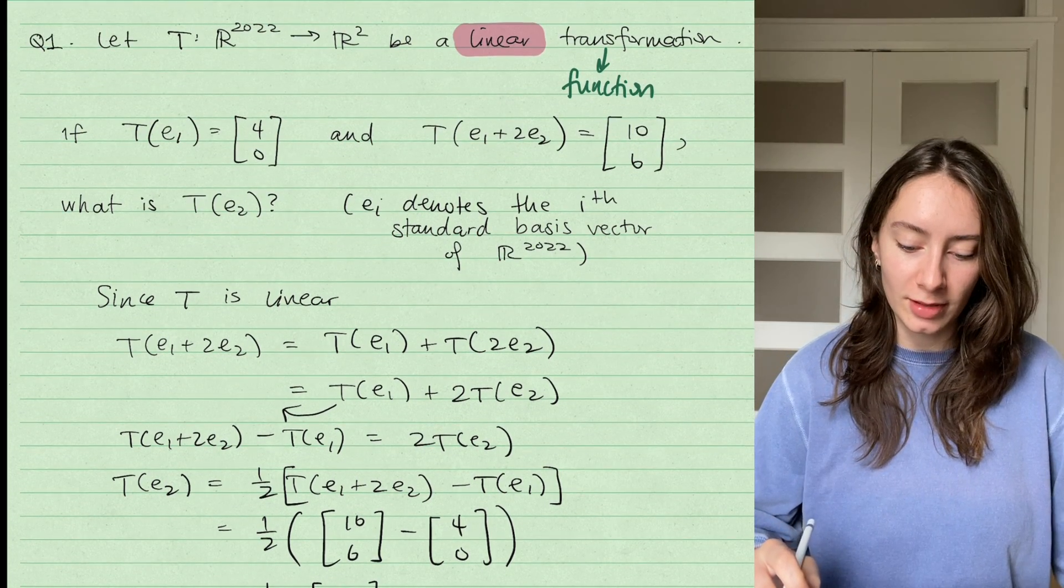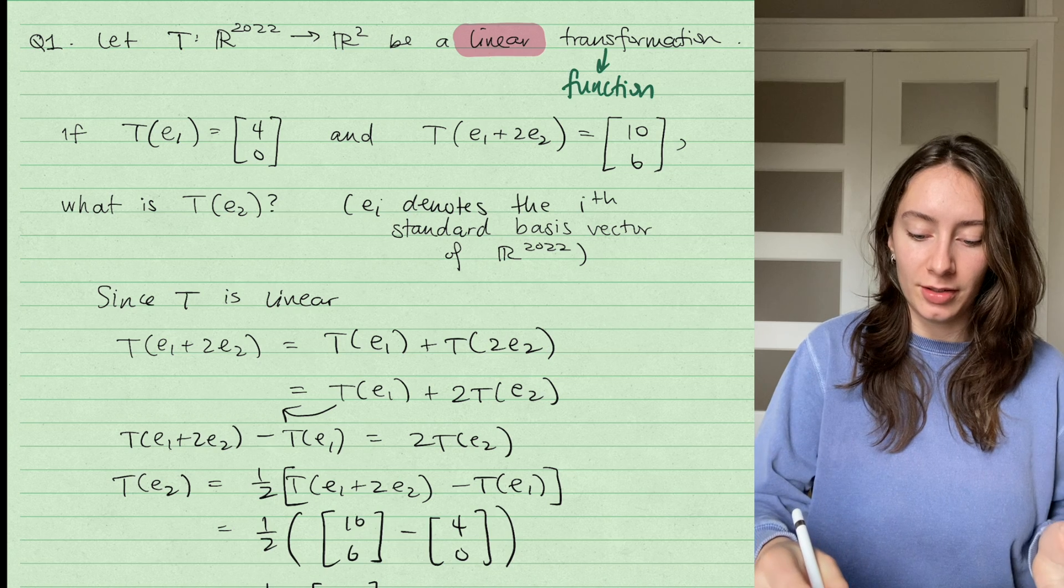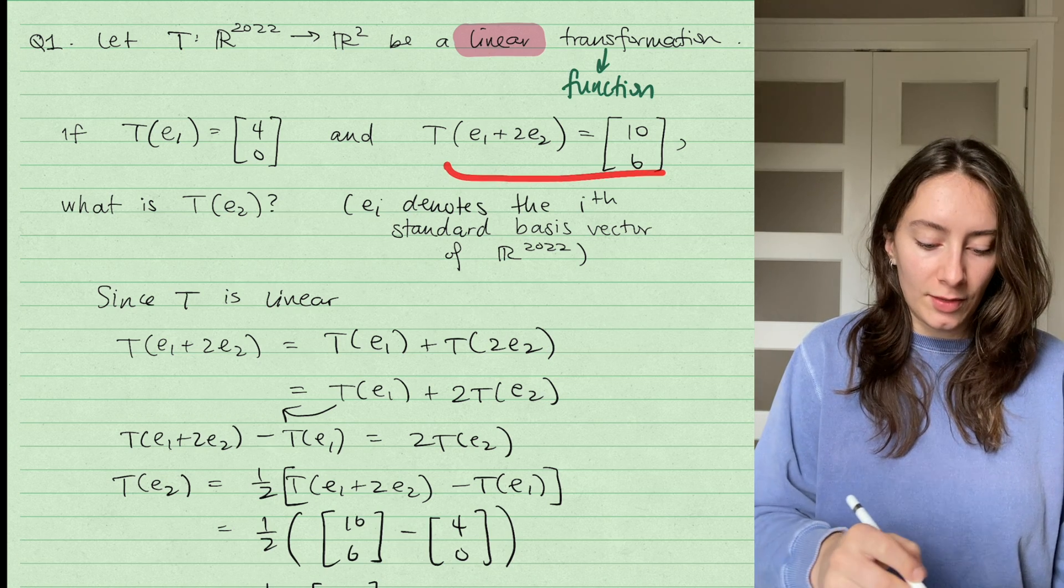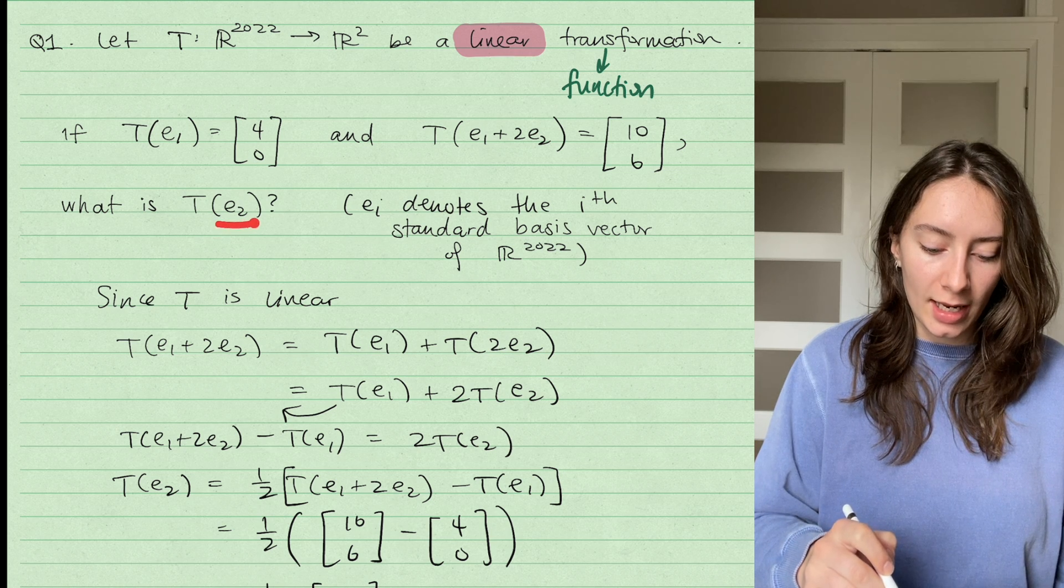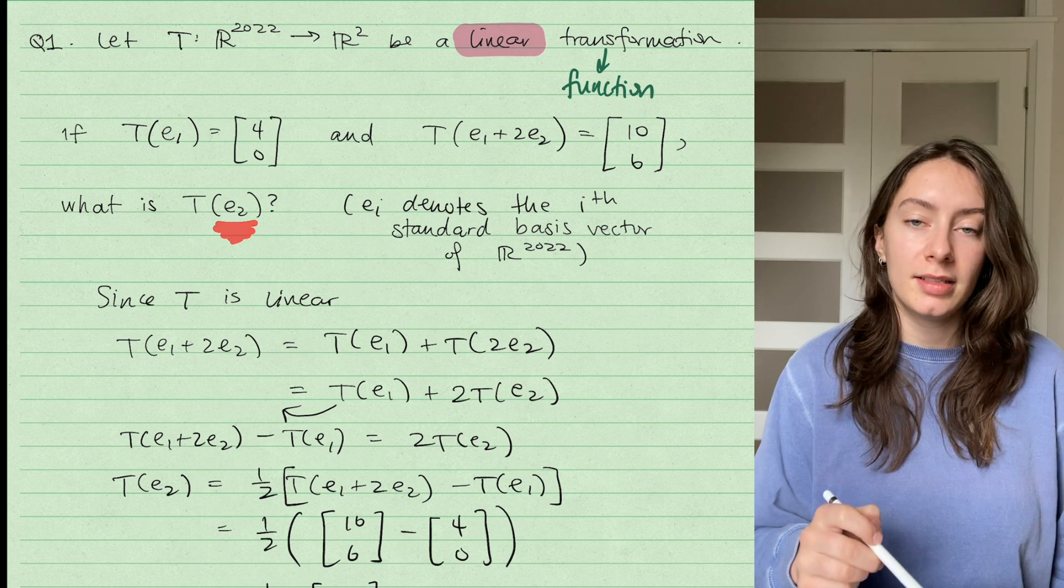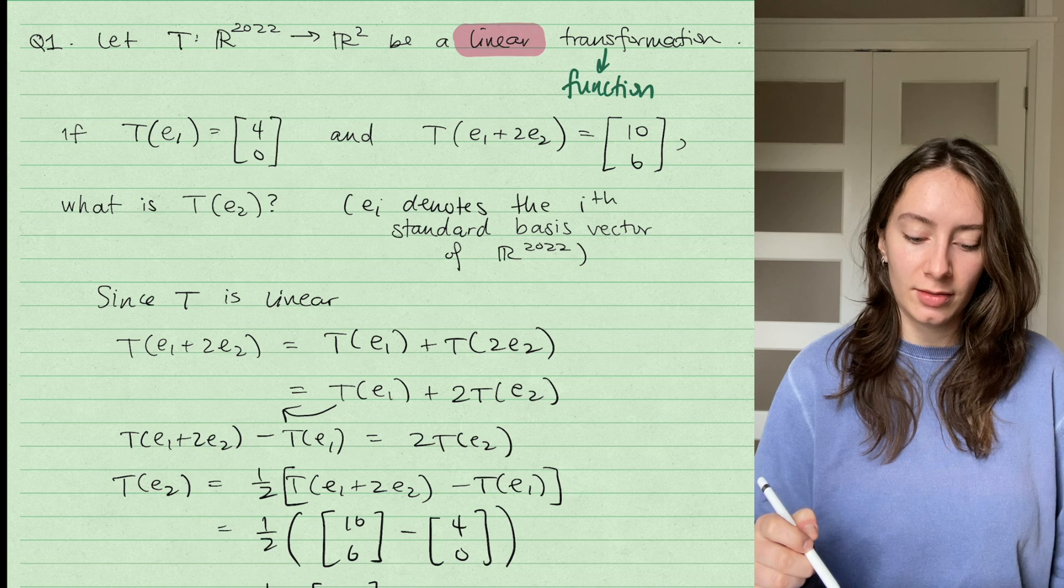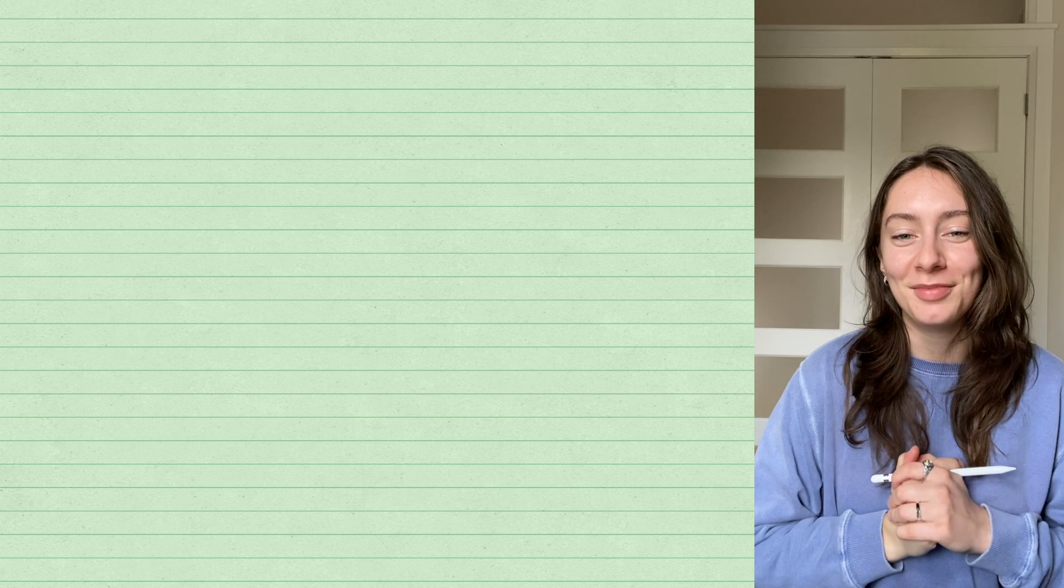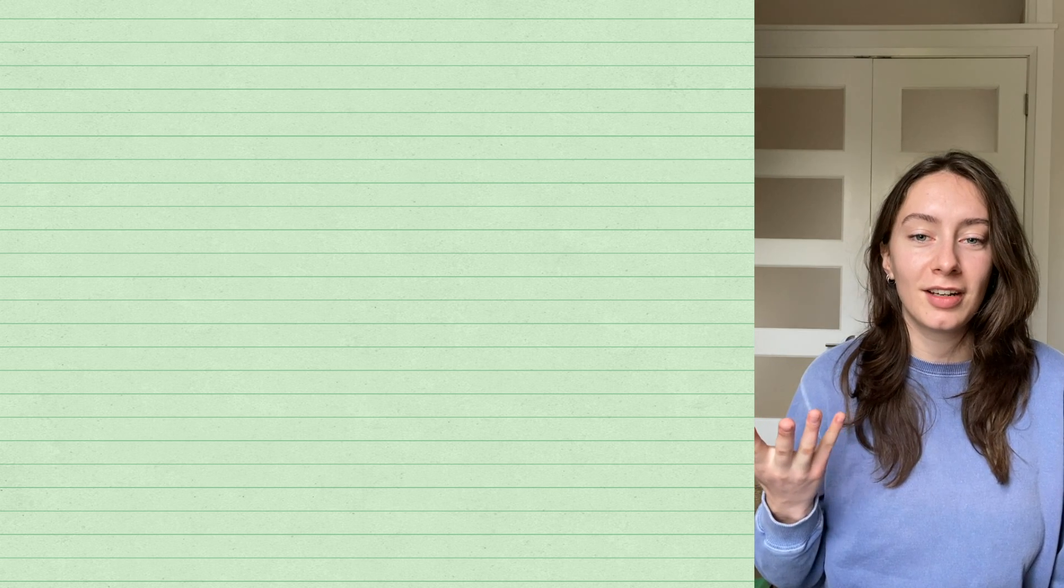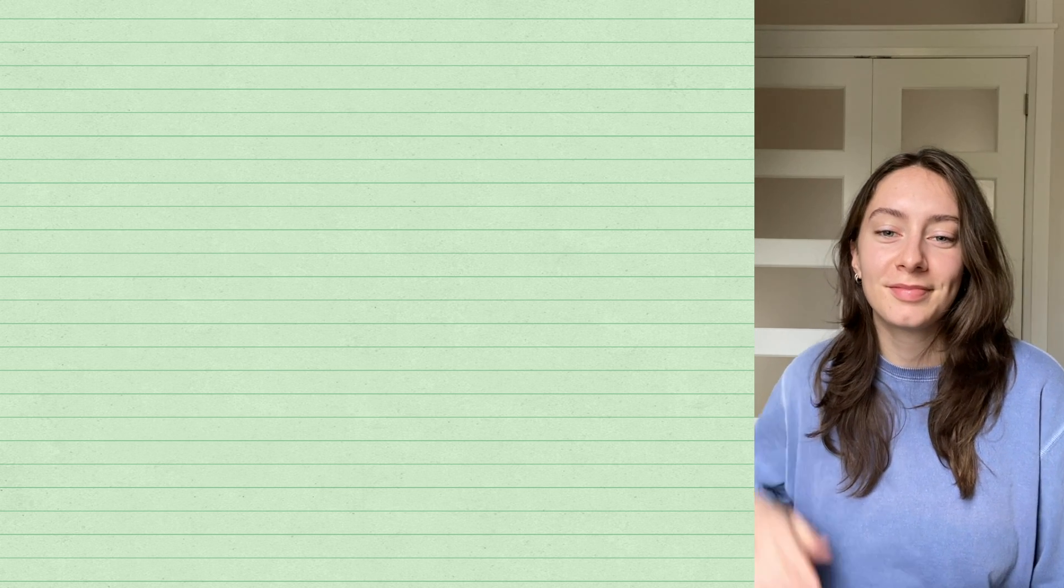So that is how, given this information about my linear transformation, given these two pieces of information, I can figure out where it takes the second standard basis vector of R^2022, of 2022 dimensional space. Thanks so much for watching, and I hope you found this helpful. If you want to, feel free to check out, I have some other videos on linear algebra that might also be helpful. Bye!